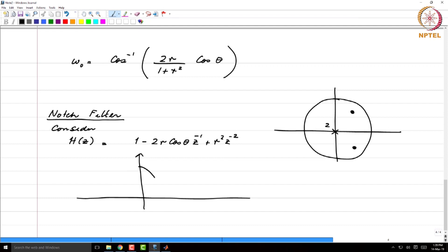And the response looks like this. So, if you are on the unit circle, you will have a certain magnitude response as you go across. Since you are approaching this zero, the response will dip, will reach a minimum and then again increase. And it is very easy to see that the value of omega naught remains precisely the same.